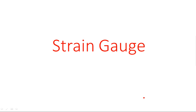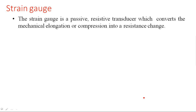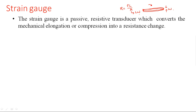A strain gauge is a passive resistive transducer which converts mechanical elongation or compression into a resistance change. Consider one wire having some width W. The resistance is R = ρL/A, where A is equal to length times W.